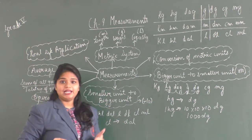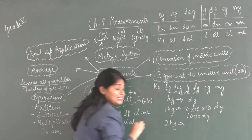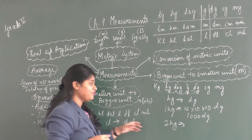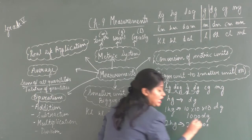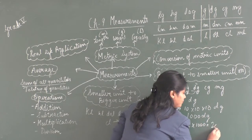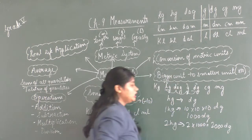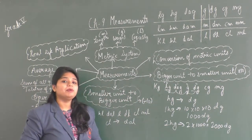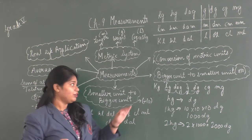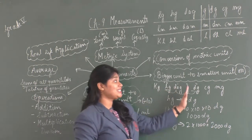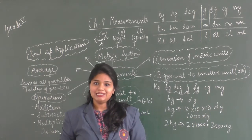For example, if I need to convert 2 hectograms into decigrams, I will multiply 2 with 1000 and get 2000 decigrams. Similarly, you can convert every bigger unit into a smaller unit — just remember that for every step you take towards a smaller unit, you multiply by 10.